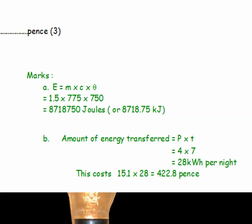Let's have a look at the answers for the first part. How much energy is transferred? Find the correct equation. That's E equals M times C times theta. Which is 1.5 kg times 775. That's the temperature change. Times 750. That's the specific heat capacity. So the answer is 8,718,750 joules or 8,718.75 kilojoules.